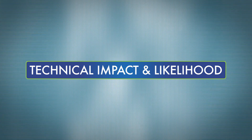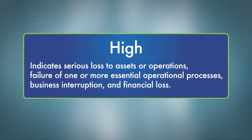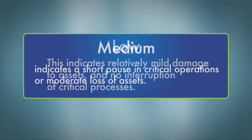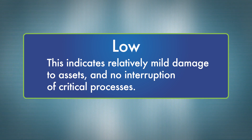The United States Federal Information Processing Standard, publication 199, outlines the application of security categorizations to federal information systems. This categorization is based on an estimation of the impact that a security breach — resulting in the loss of confidentiality, availability, and integrity of data — would likely have on the organization. The likely impact falls into one of three categories: High indicates serious loss to assets or operations, failure of one or more essential operational processes, business interruption, and financial loss. Medium indicates a short pause in critical operations or moderate loss of assets. Low indicates relatively mild damage to assets and no interruption of critical processes.